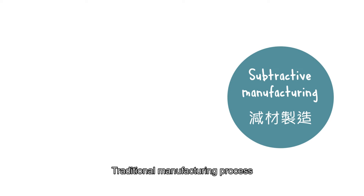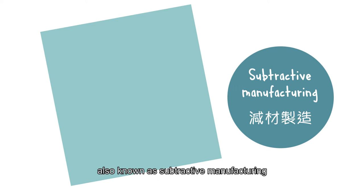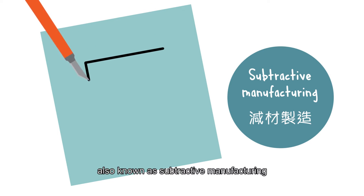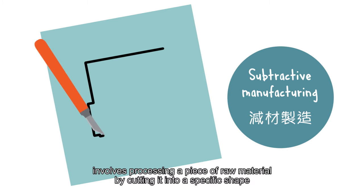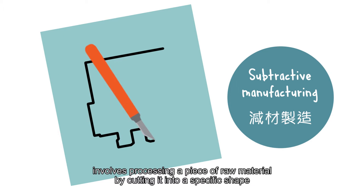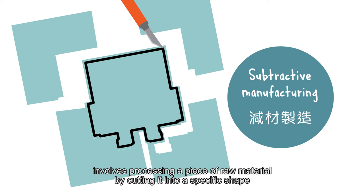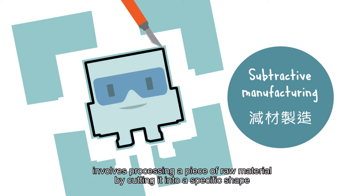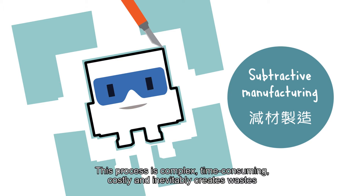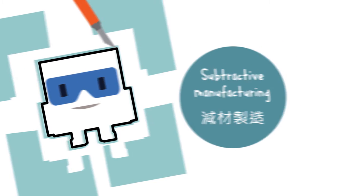Traditional manufacturing process, also known as subtractive manufacturing, involves processing a piece of raw material by cutting it into a specific shape. This process is complex, time-consuming, costly, and inevitably creates waste.